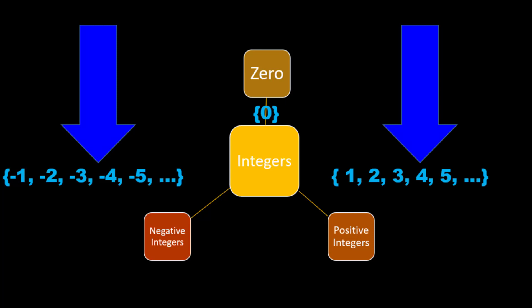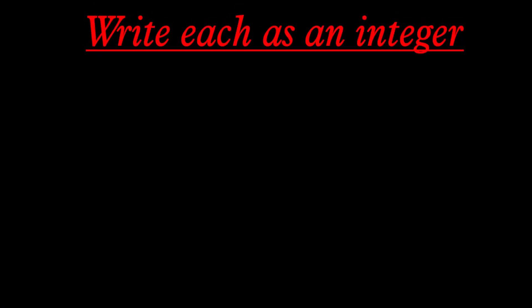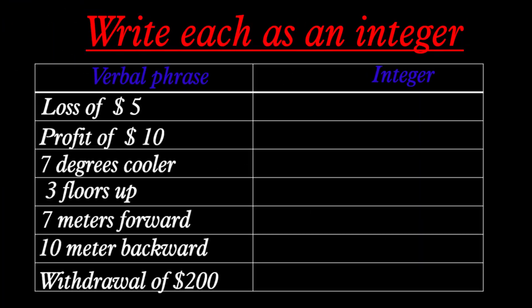Negative integers are negative 1, negative 2, negative 3, negative 5, and so on. Now let's write each situation as an integer. A loss of five dollars means negative 5. A profit of ten dollars means positive 10. Seven degrees cooler means sub-zero, so negative 7. Three floors up means positive 3. Seven meters forward means positive 7.